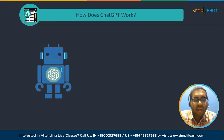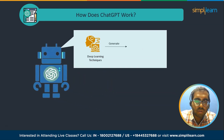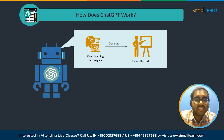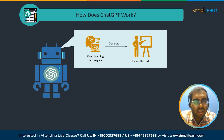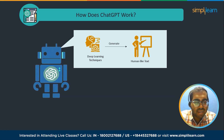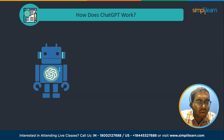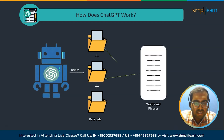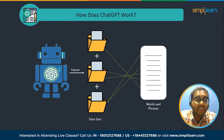ChatGPT uses deep learning techniques to generate human-like text, based on a machine learning model derived from the large language model class. It is trained on massive text datasets from the internet and learns patterns and relationships between words and phrases.